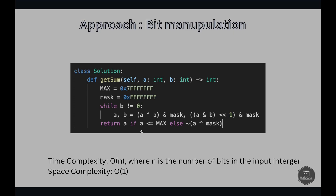Since the answer is a 32-bit signed integer, the operation is: return A if A is less than or equal to max, else return the complement of A.